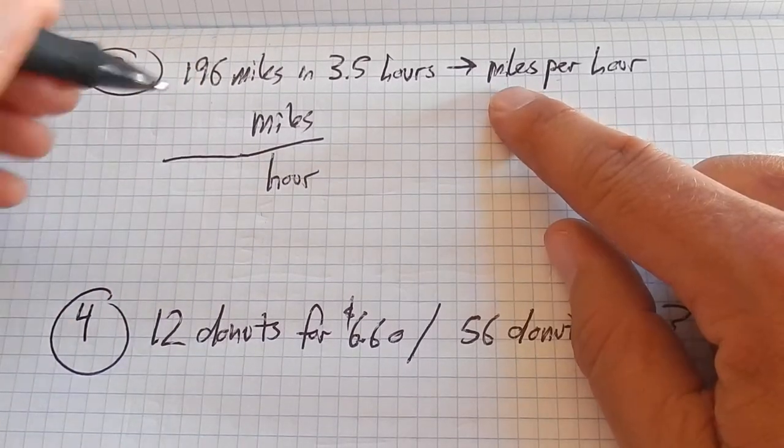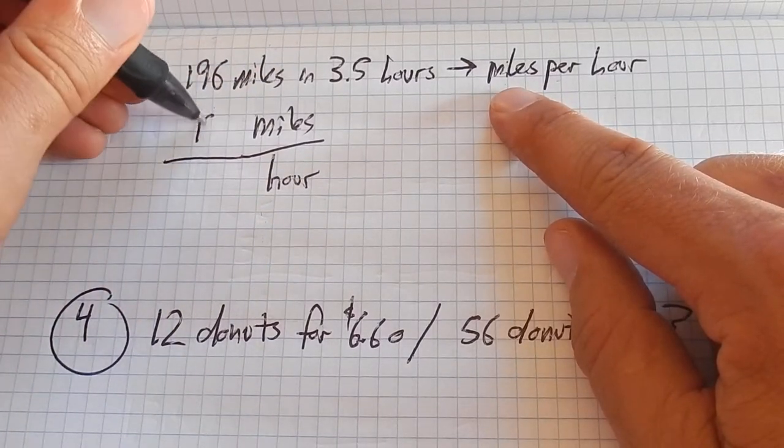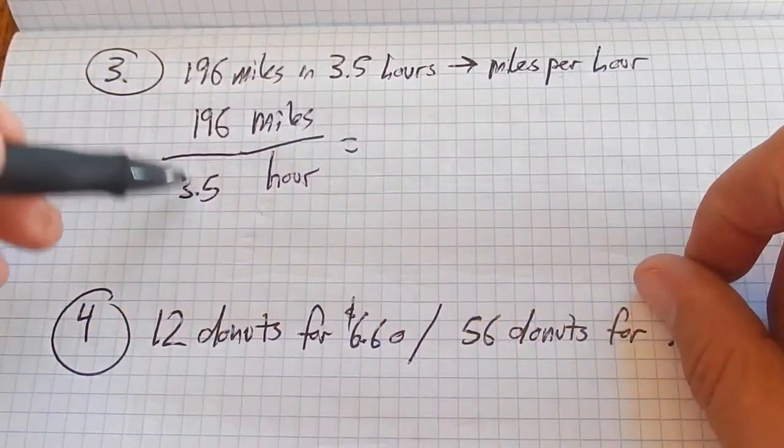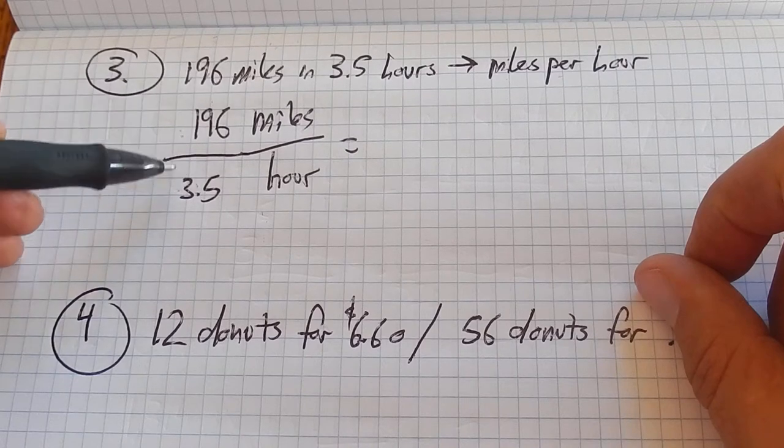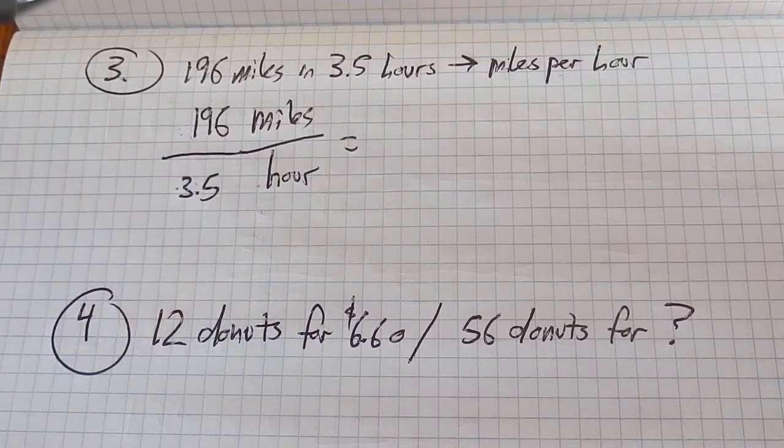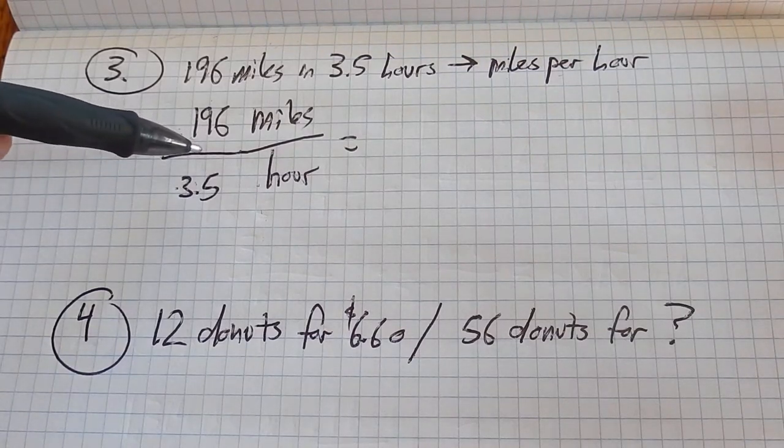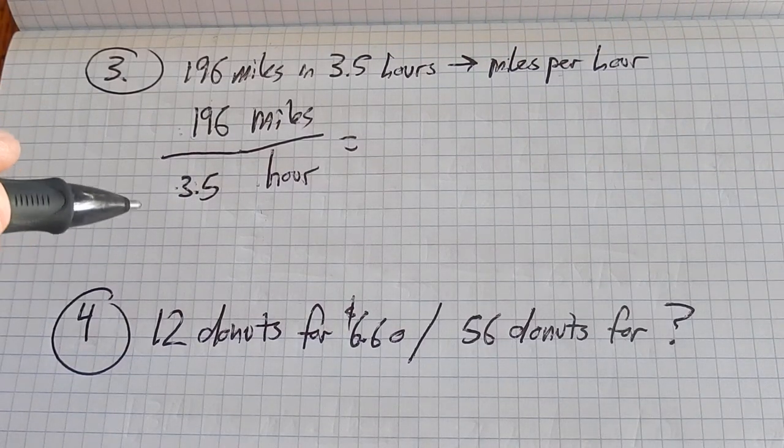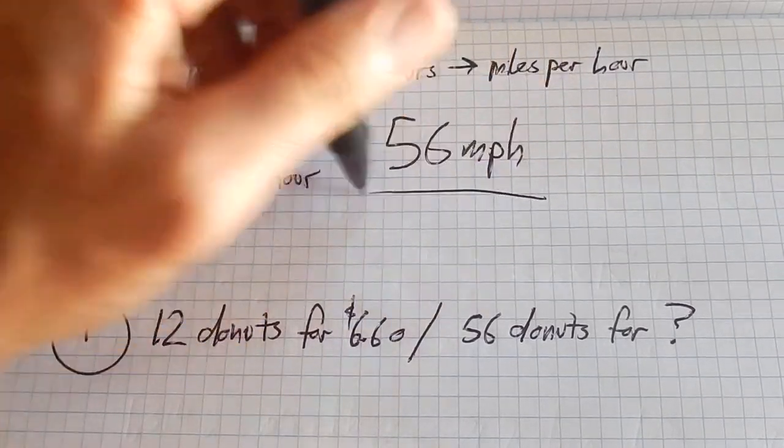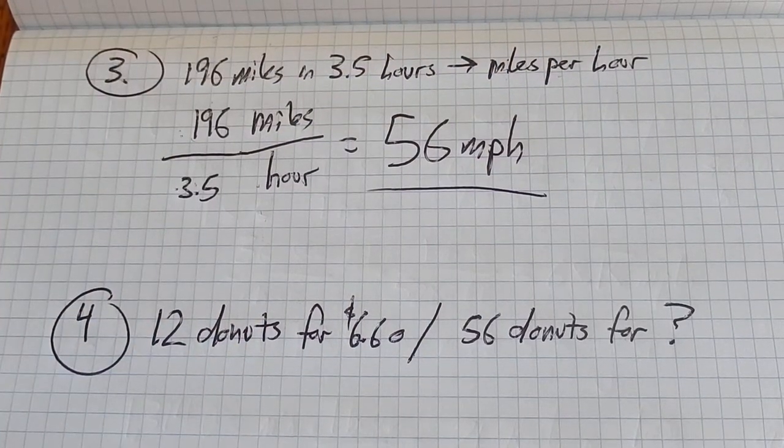It's just a division problem, and we have all the information: 196 miles in 3.5 hours. So if we do this division, 196 divided by 3.5, that will tell us how many miles in one hour. Like, how many times does 3.5 go into 196? So I can grab my calculator, do that out, and I get 56 miles per hour. Go, Scotty.